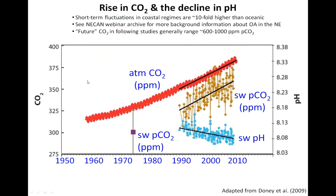With many talks, I'm going to start with a similar plot — a very familiar plot looking at carbon dioxide in the atmosphere, which is shown here in this red curve. Carbon dioxide in the surface ocean, shown here in these goldish symbols, and the corresponding decrease in pH over the last 20 or so years corresponding to the increase in CO2.